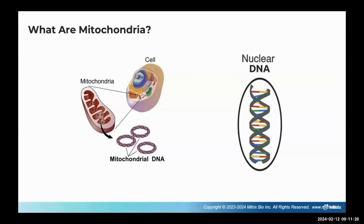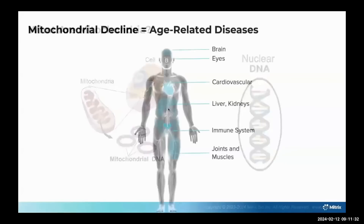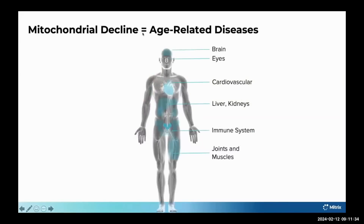Mitochondria are very similar in a lot of ways to what you see in bacteria, because that's originally where they came from. The theory is that they were bacteria floating around a billion years ago, and they joined in with the DNA. A billion years later, mitochondrial and nuclear DNA evolution has produced us.